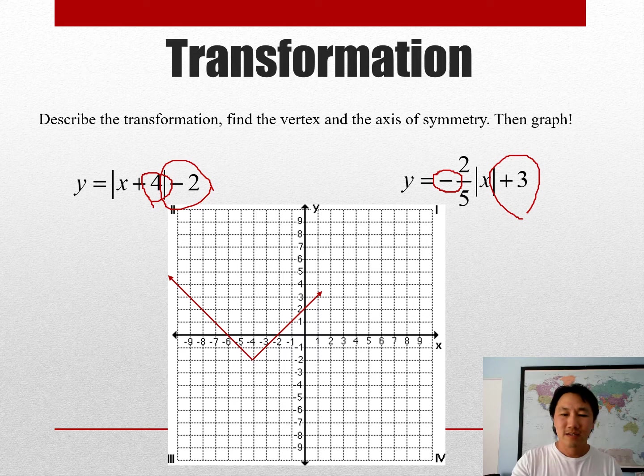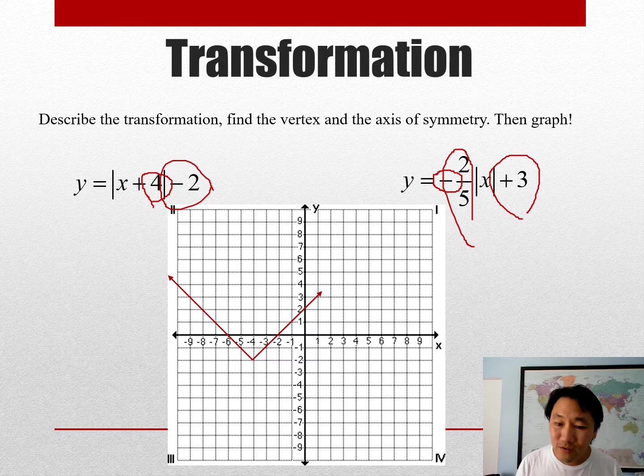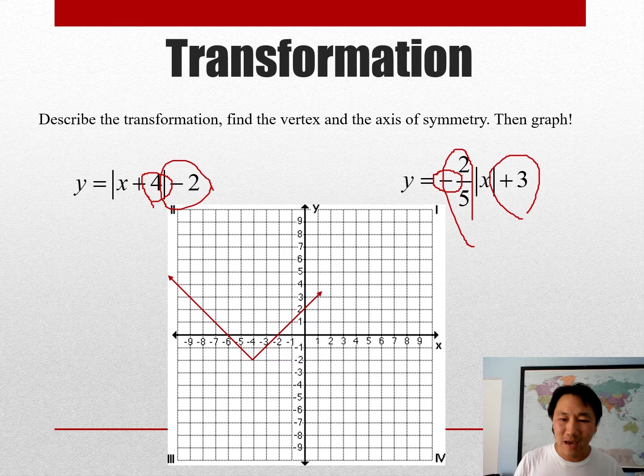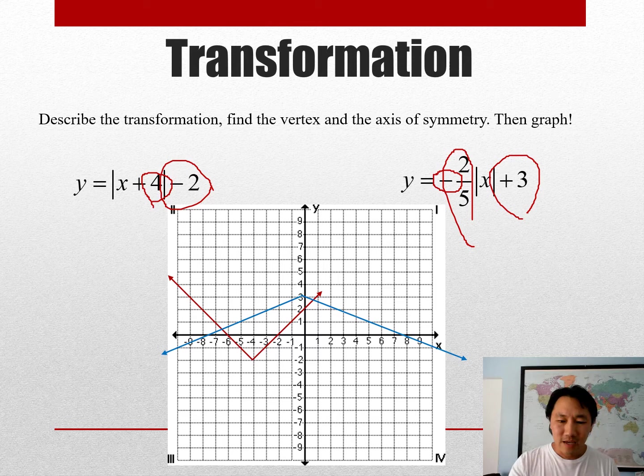All right, but now let's go ahead and look at the two-fifths. The two-fifths is a fraction that's less than one. When that happens, then the graph gets a little bit more wide. And if you think about it as slope, rise over run, it is two over five. So that's going to be the slope when you draw it out. It kind of automatically gets wider.